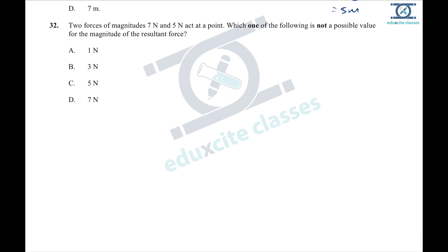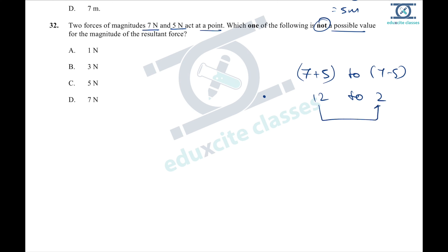Question 32: two forces of magnitude 7 N and 5 N act at a point. The possible range of the resultant is from (7 − 5) = 2 N to (7 + 5) = 12 N. Any value outside this range is not possible. Checking the options: 3, and values within range are possible, but 1 Newton is less than 2, so option A (1 N) is not a possible value. Thank you, keep learning.